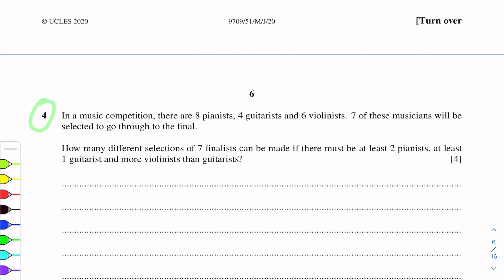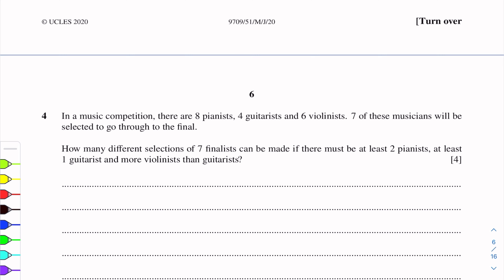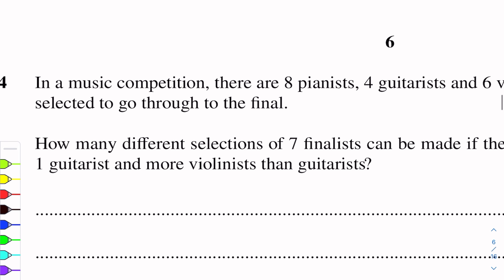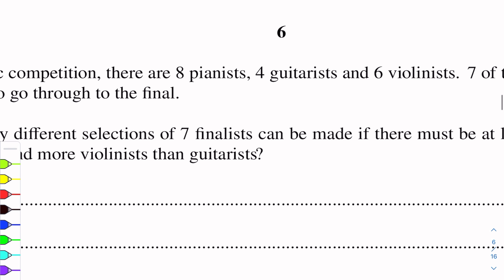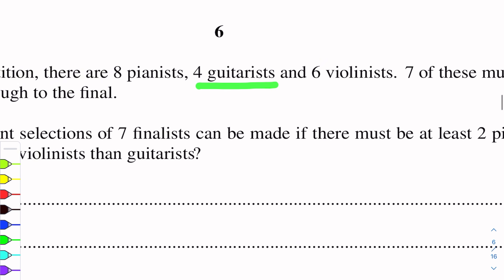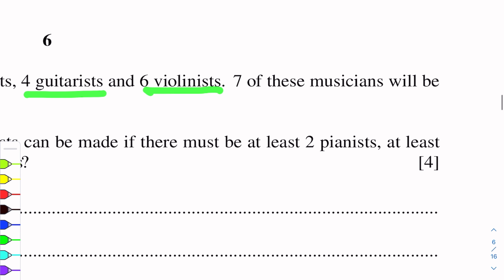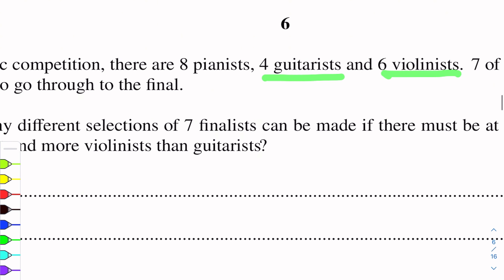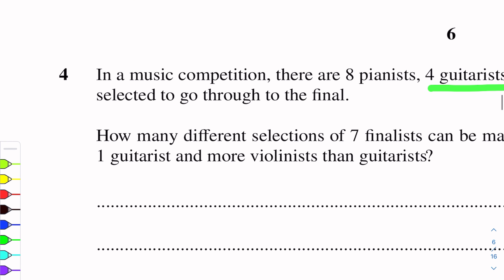Question No. 4. This question is from Permutations and Combinations. In the music competition, there are 8 pianists, 4 guitarists and 6 violinists. 7 of these musicians will be selected to go to the final.